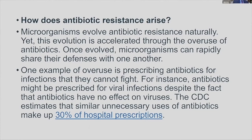How does antibiotic resistance arise? Microorganisms evolve antibiotic resistance naturally, yet this evolution is accelerated through the overuse of antibiotics. Once evolved, microorganisms can rapidly share their defenses with one another. One example of overuse is prescribing antibiotics for infections they cannot fight — for instance, antibiotics might be prescribed for viral infections despite the fact that antibiotics have no effect on viruses.